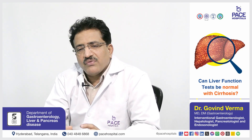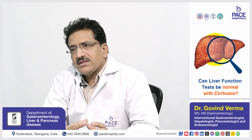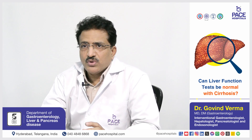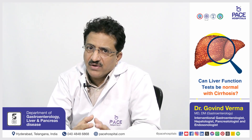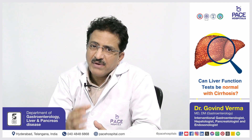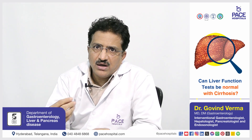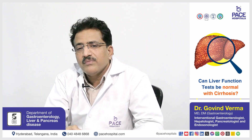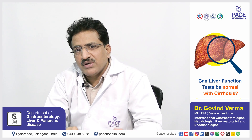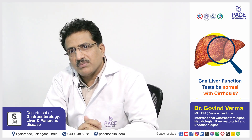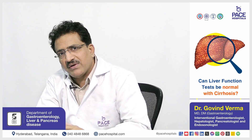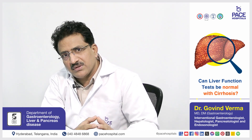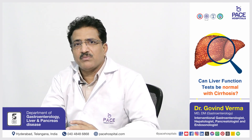A normal liver function does not rule out cirrhosis of liver, whereas in all patients with advanced cirrhosis you will have an abnormal liver function test. If a patient is diagnosed for the first time in your OPD with cirrhosis of liver based on ultrasound or endoscopic findings, it does not necessarily mean they will have an abnormal liver function test — although that is seen in 70 to 80 percent of patients. Around 10 to 30 percent of patients in early cirrhosis may not have an abnormal liver function test, whereas in advanced cirrhosis, 90 to 95 percent of patients will have an abnormal liver function test.